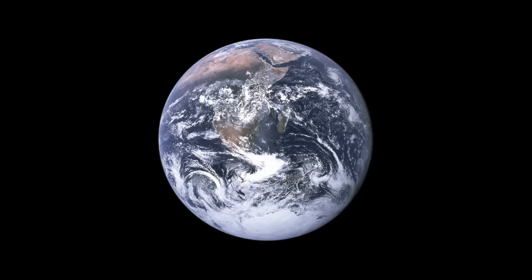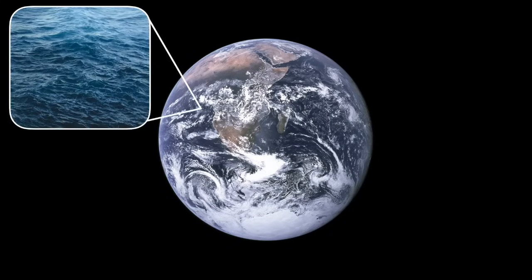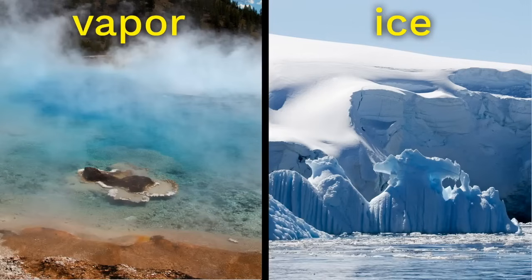Earth is the only planet in the solar system with liquid water on its surface. In fact, that's where it gets the nickname, the blue planet. Earth is not so hot that all of the water boils into vapor, and it's also not so cold that all of the water freezes into ice. It's just right for life. So that explains how Earth is unique in our solar system.